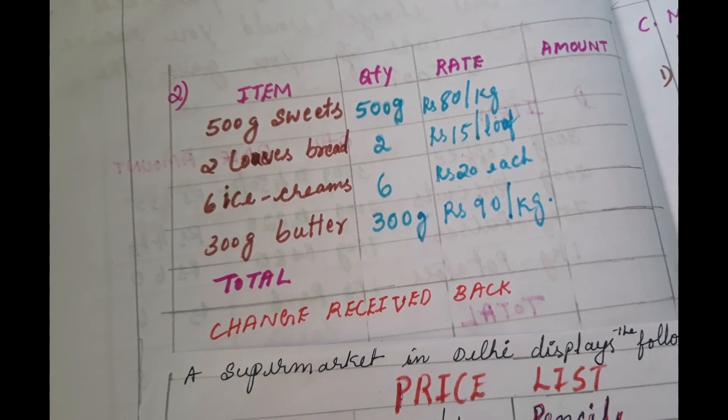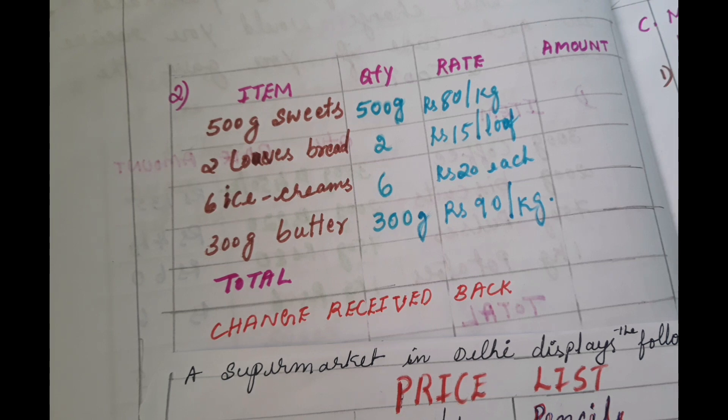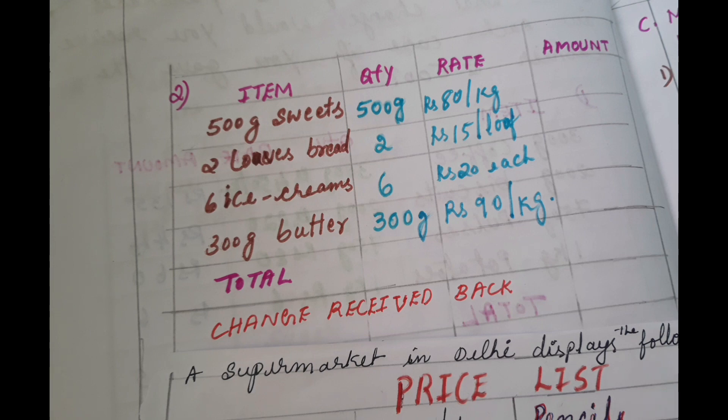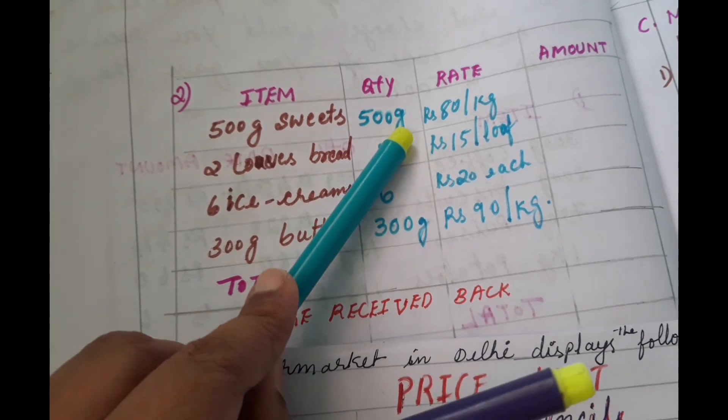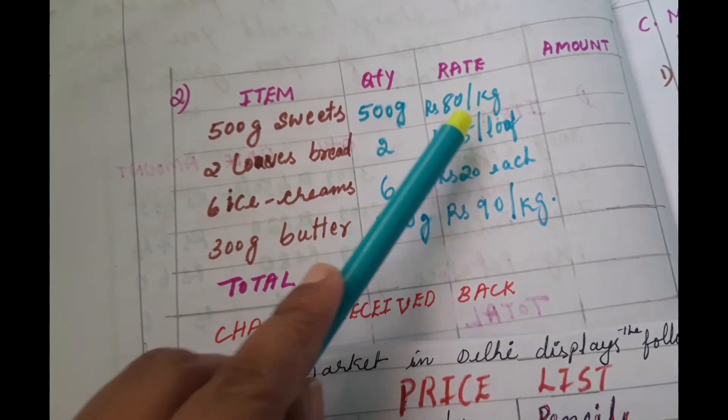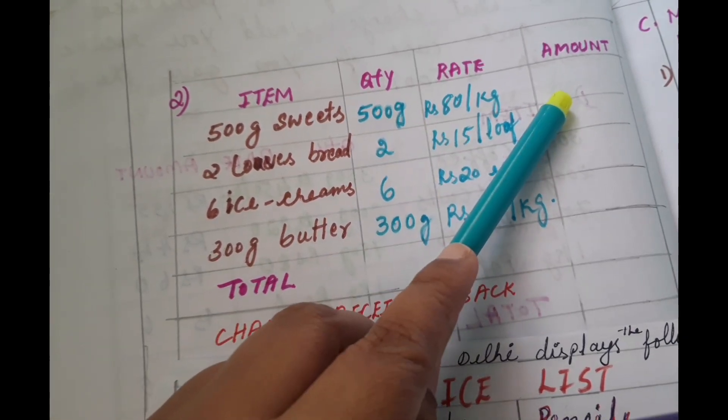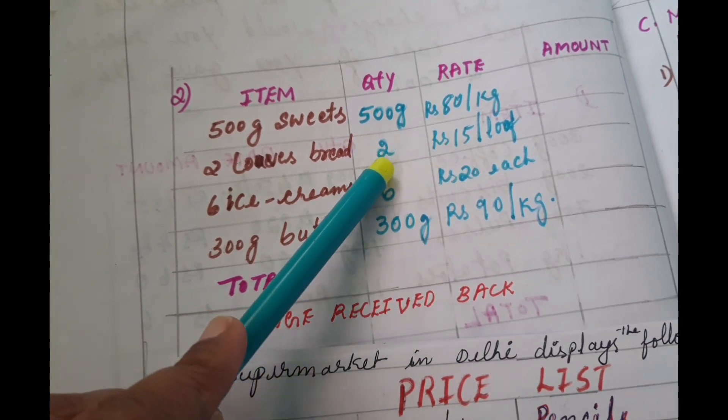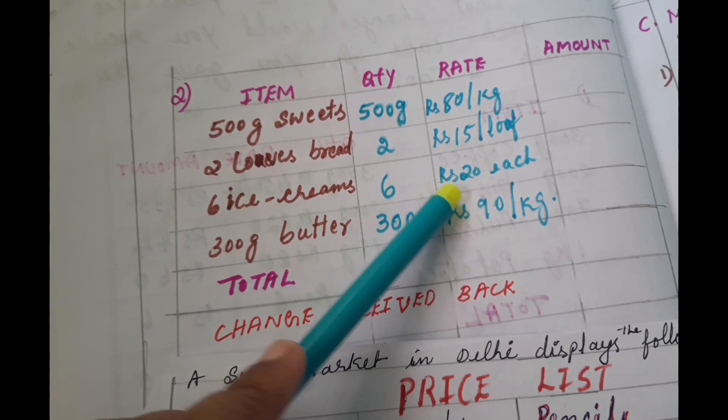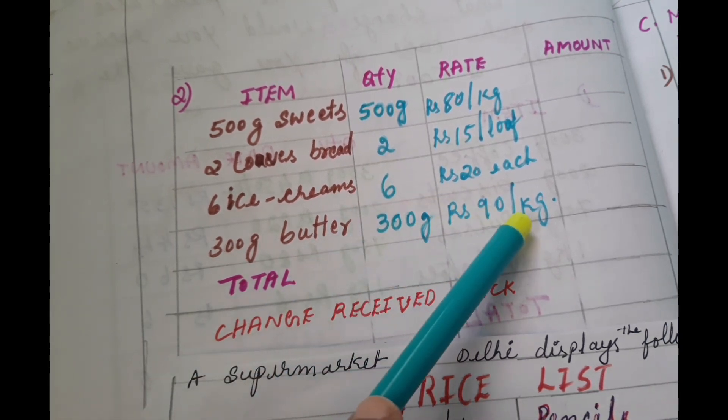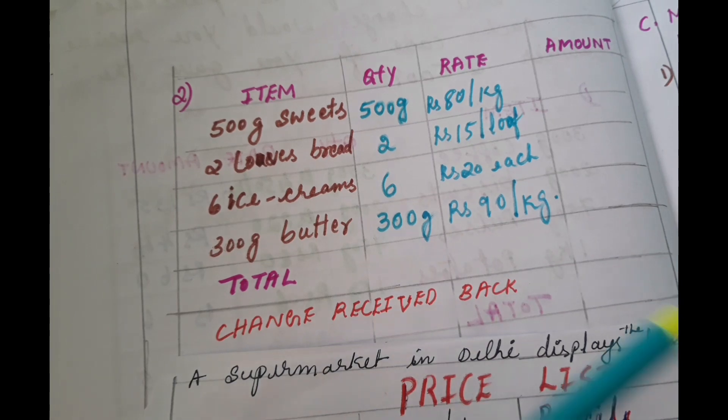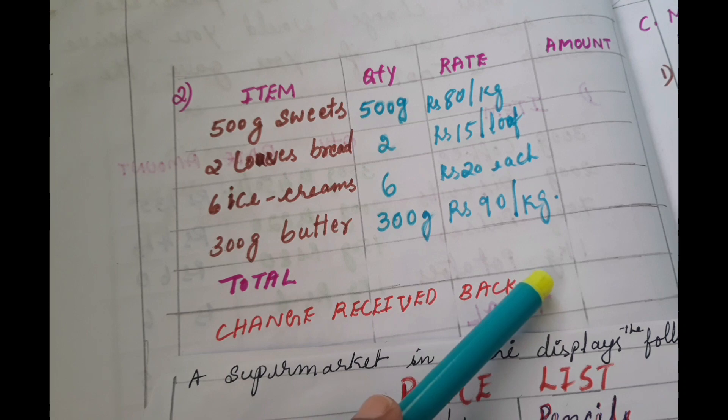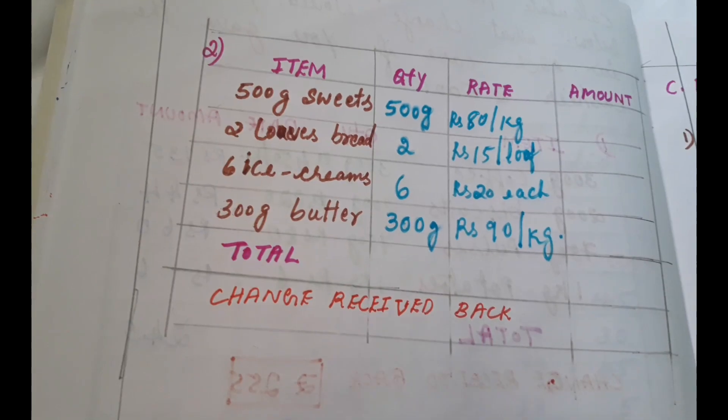Here it is in grams, so we have to convert. According to the quantity, according to the standard value, we have to convert into the amount. Grams and kg are different measurements, so we have to convert. For bread and ice cream we can directly find the amount, but for sweets and butter we need to convert.